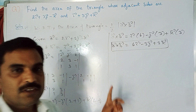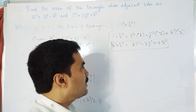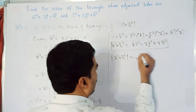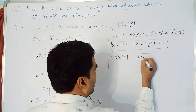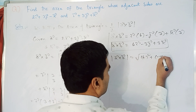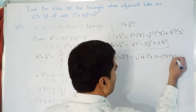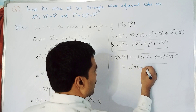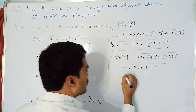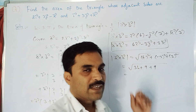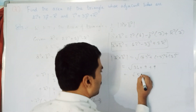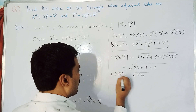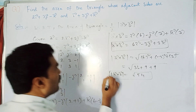Now we take the magnitude of a × b. |a × b| = √(6² + (-3)² + 3²) = √(36 + 9 + 9) = √54.